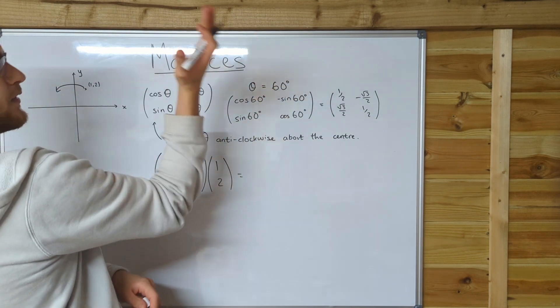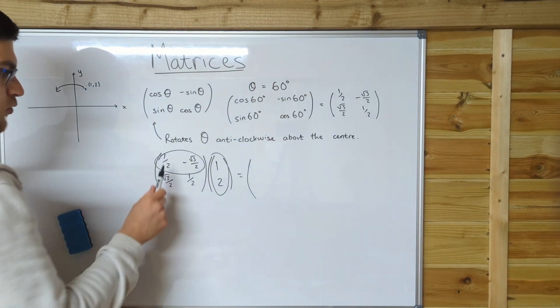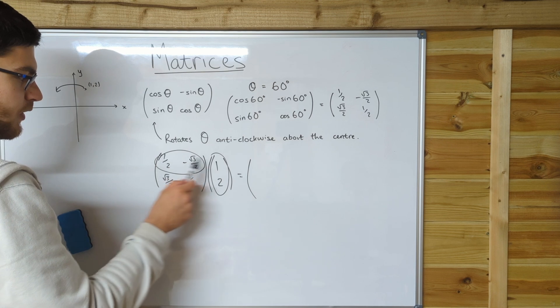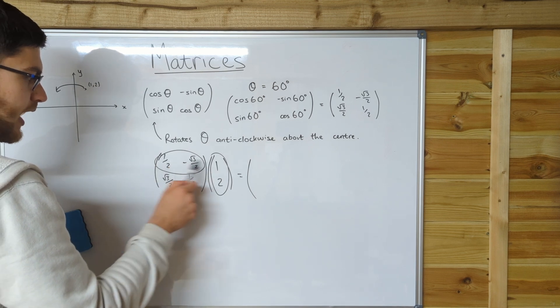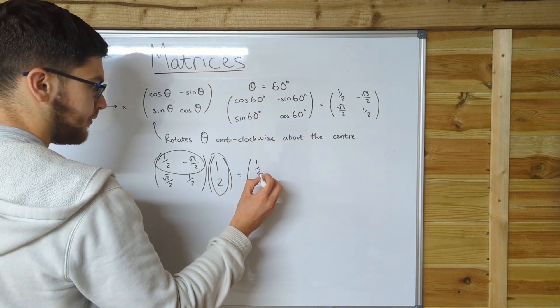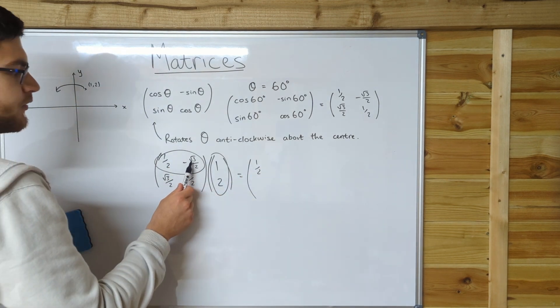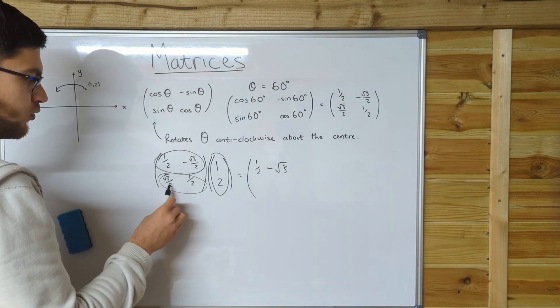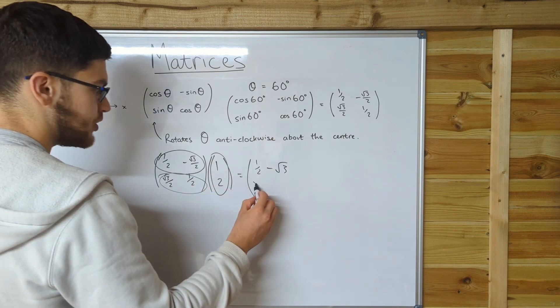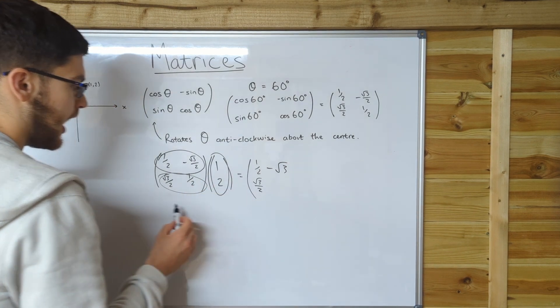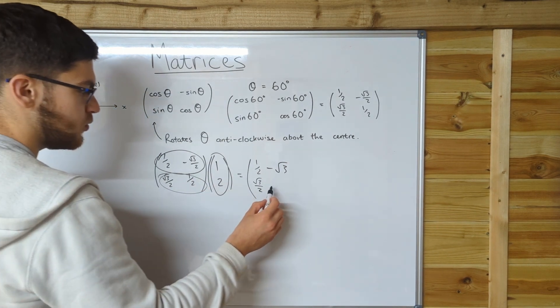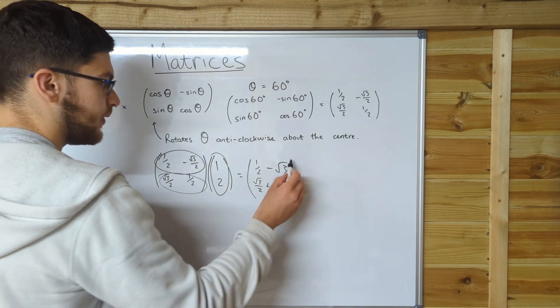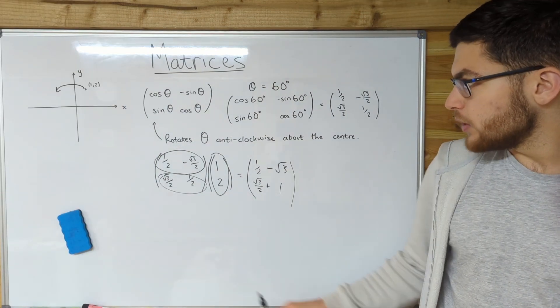When we multiply this by the column vector 1, 2, we should get it to rotate 60 degrees that way. So we're going to do row times first column. So the first numbers is 1 times 1 half, which is 1 half. And we've got minus root 3 over 2 times 2, which is minus root 3. Next we've got root 3 over 2 times 1, which is root 3 over 2. And then we've got 1 half times 2, which is plus 1.